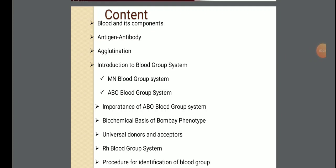This is the content of this lecture: Blood and its components, Antigen, Antibody, Agglutination, Introduction to Blood Group Systems — the MN Blood Group System and ABO Blood Group System — Importance of ABO Blood Group Systems, Biochemical Basis of Bombay Phenotype, Universal Donors and Acceptors, RH Blood Group System, and Procedure for Identification of Blood Groups.